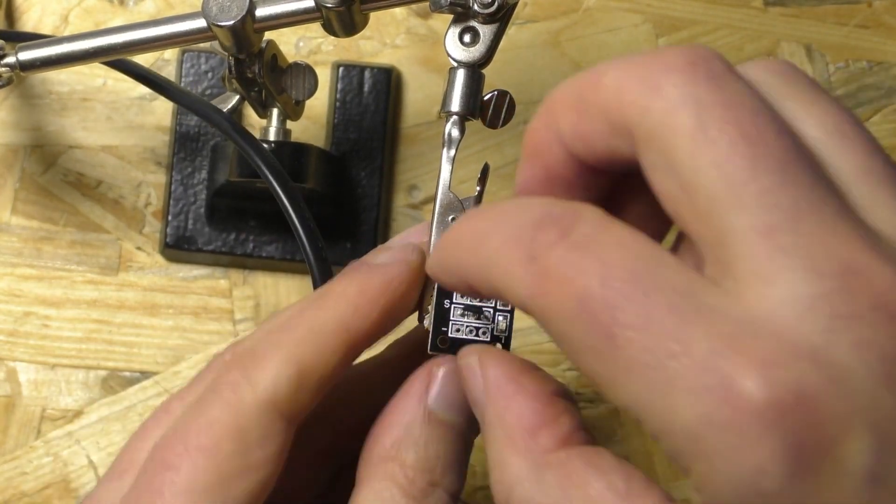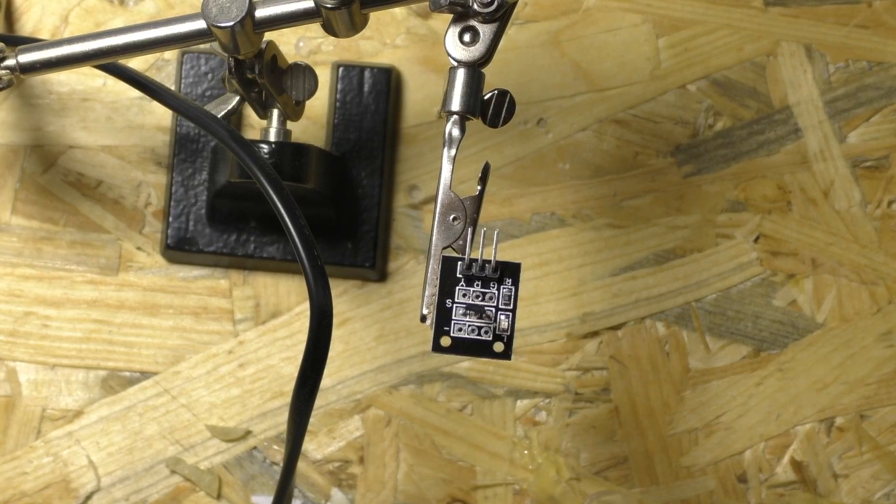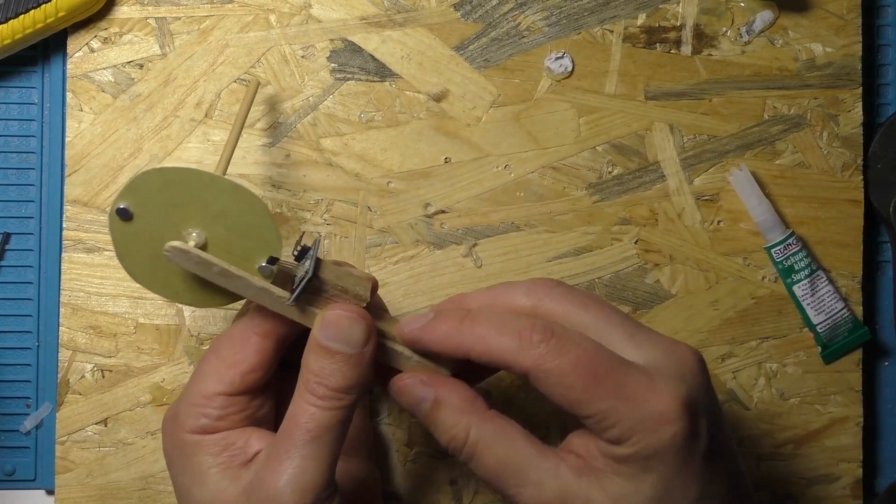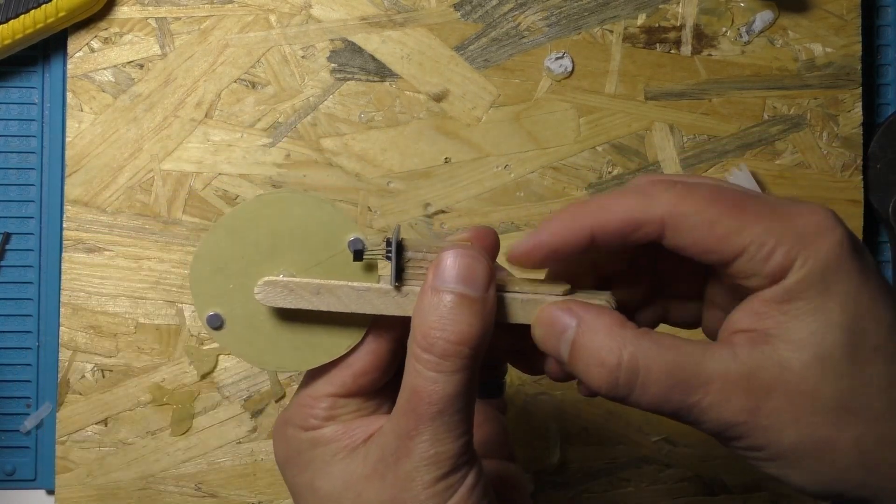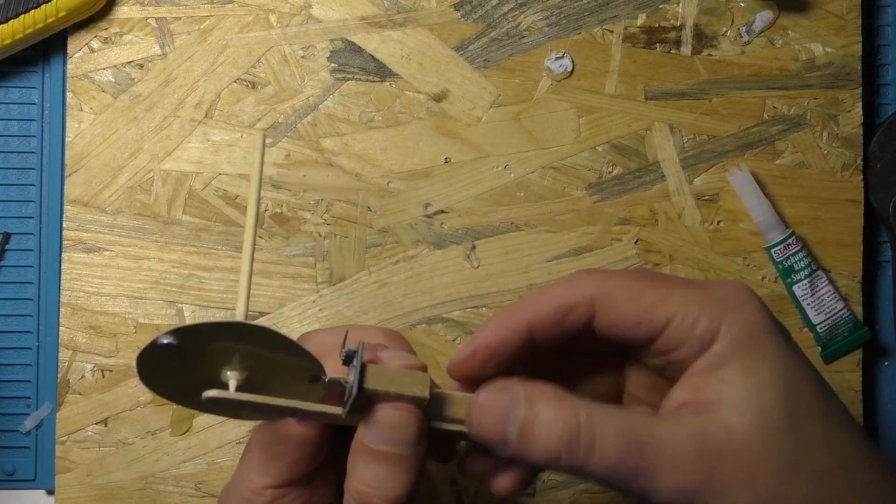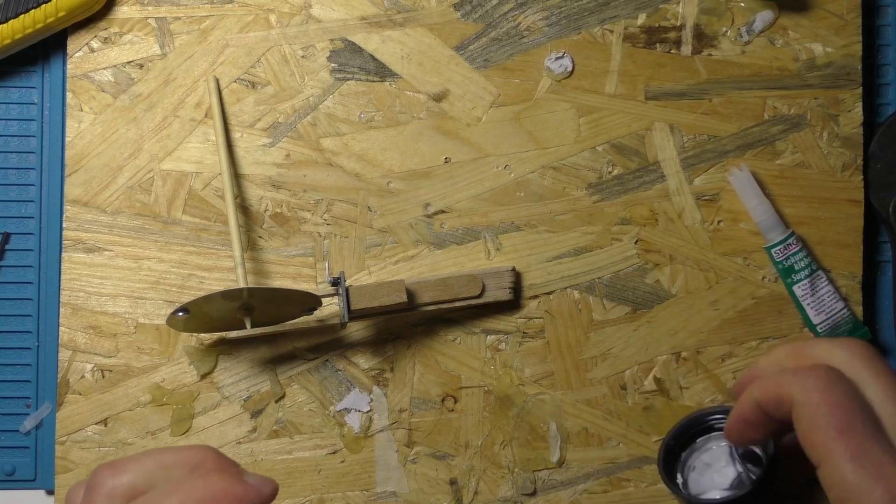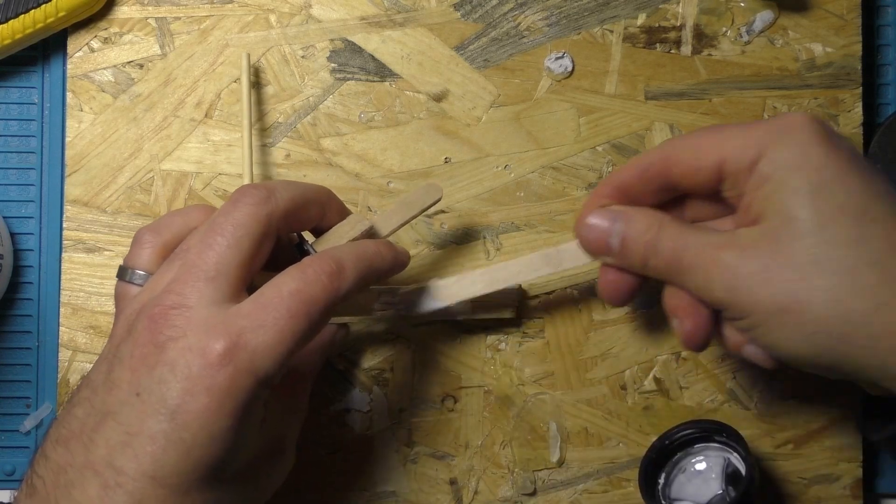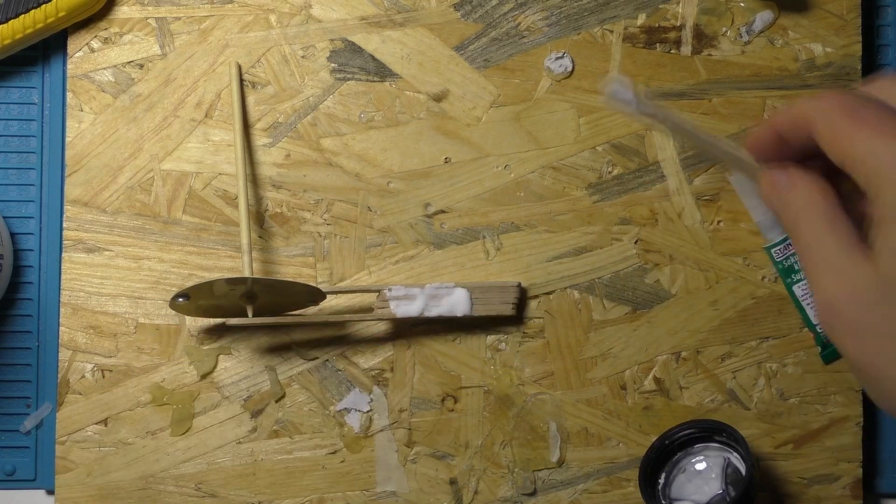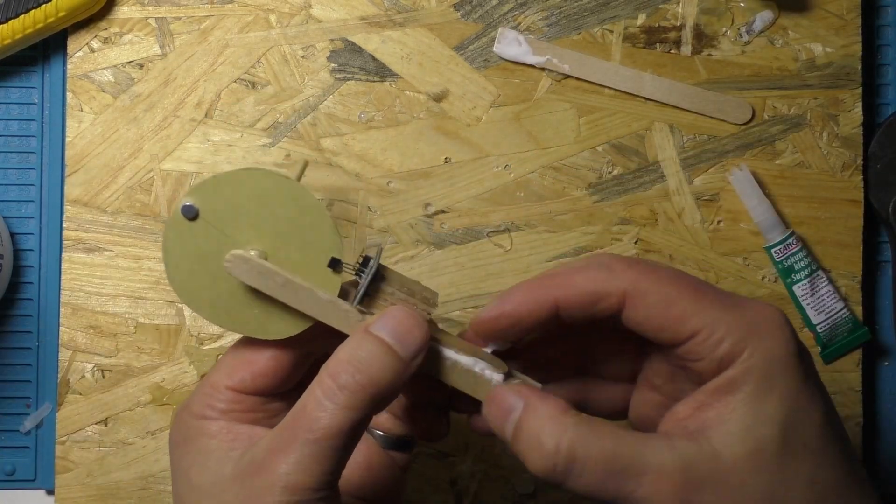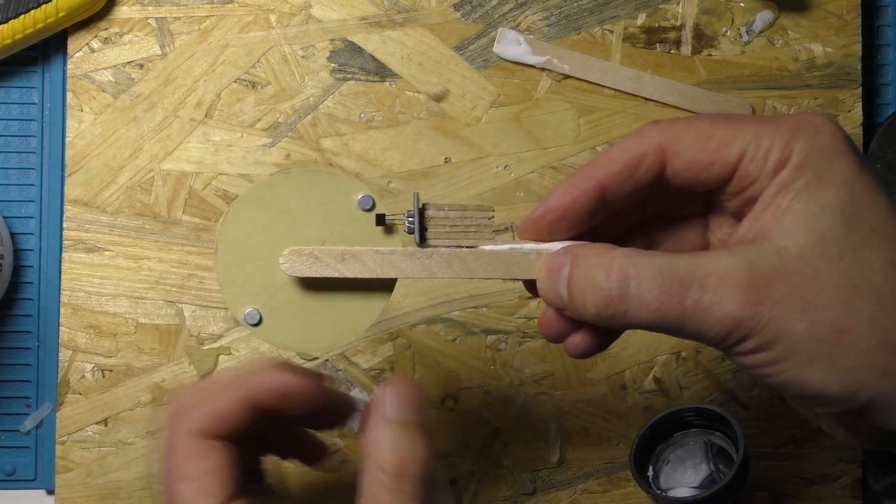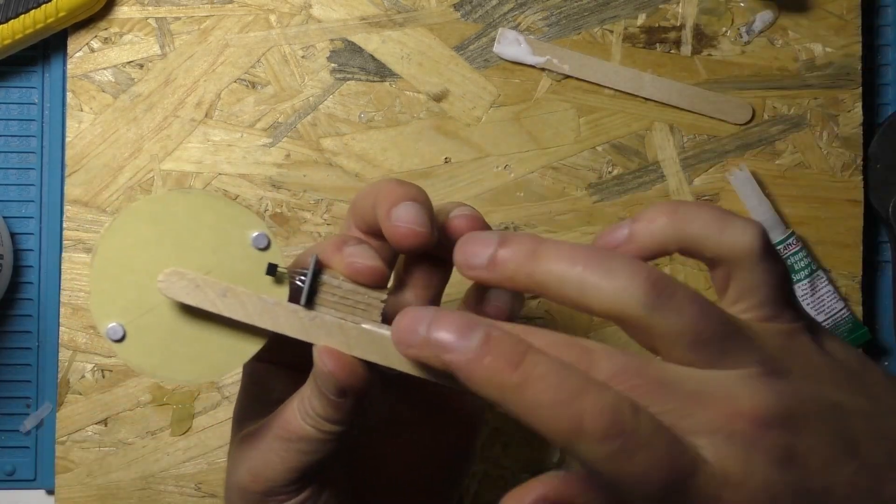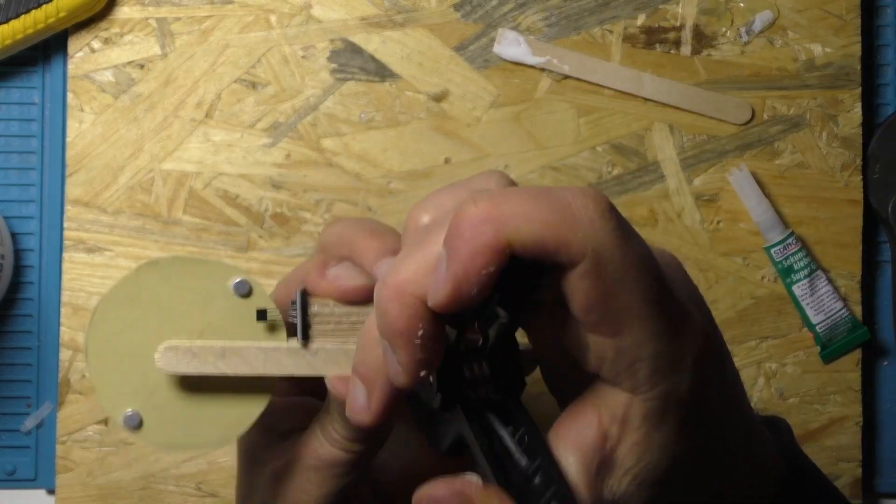So this hall effect sensor came in a kit that had 37 different sensors in it. There was one that was an analog hall effect sensor and one that was this one, which has an LED and a little resistor attached to it, and the LED pulses every time it goes from high to low or from low to high. I thought that would be quite cool because it would give visual feedback of every time it counts a pulse.